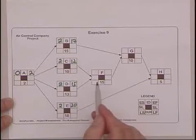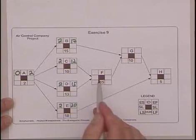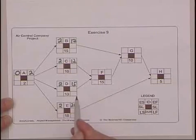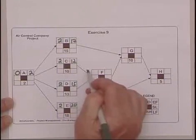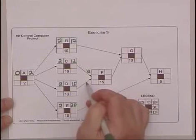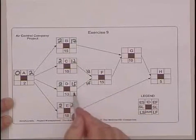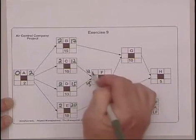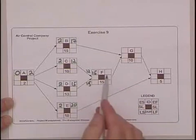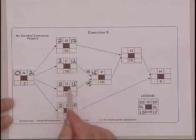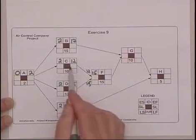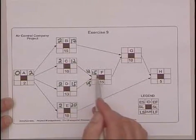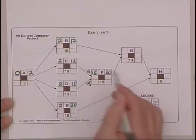Now we move to the next activity and that's F. F is a merge activity, which means there's more than one activity that has to be completed before F can start. And this is where you need to keep in mind choosing the larger number. So we have two early finishes, 12 and 15. We choose the larger number, which is 15, because F can't start until both C and D are completed. C is done on the 12th, but D is not until the 15th, so F has to wait until D is done. The earliest it can start then is 15. 15 and 15 is 30.